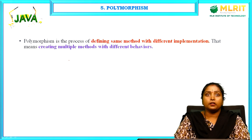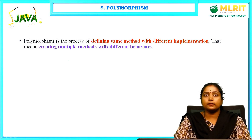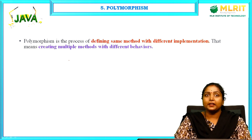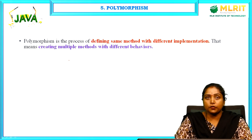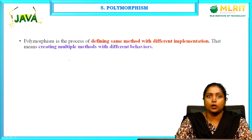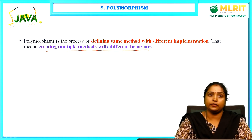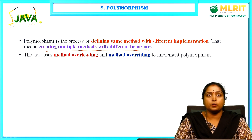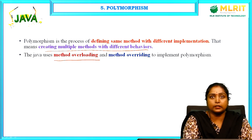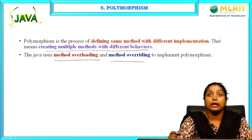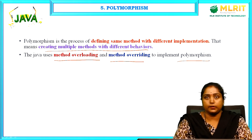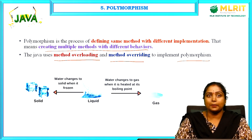Polymorphism — simply put, one thing in many forms is known as polymorphism. It is the process of defining the same method with different implementations, or creating multiple methods with different behaviors. Java uses the concepts of method overloading and method overriding to implement polymorphism.